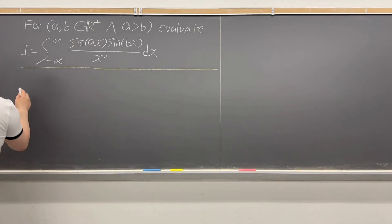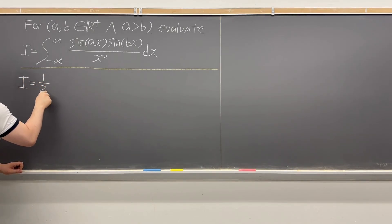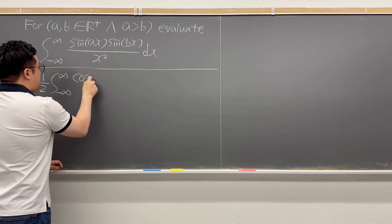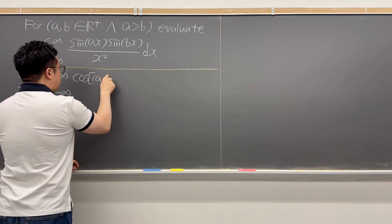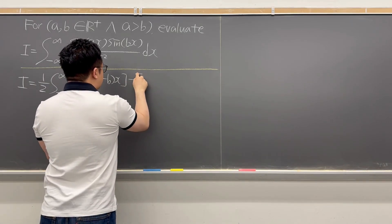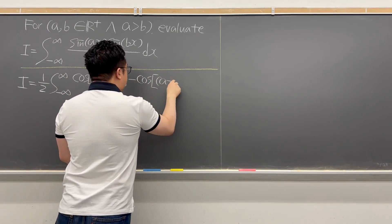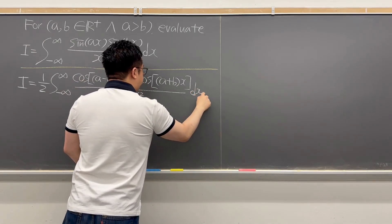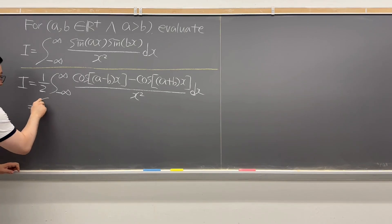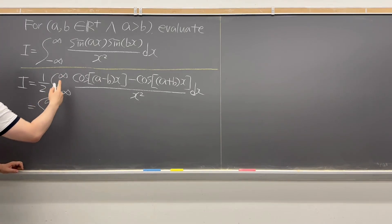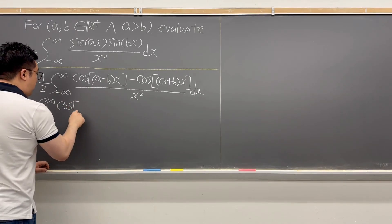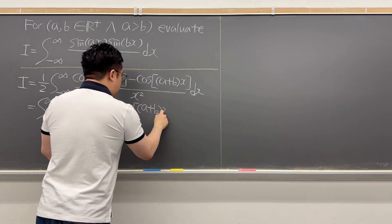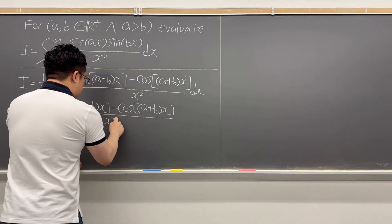For this question, we can rewrite this integral as now 1 over 2, integral from negative infinity to positive infinity of cosine of (A minus B)x minus cosine of (A plus B)x, divided by x squared, dx. We can also rewrite this as an integral from 0 to infinity of cosine of (A minus B)x minus cosine of (A plus B)x, divided by x squared, dx.